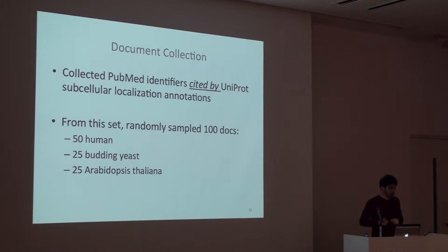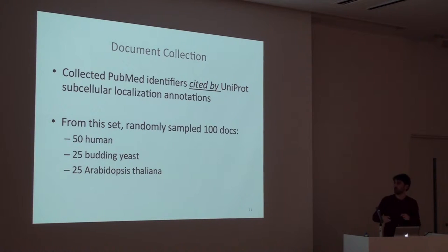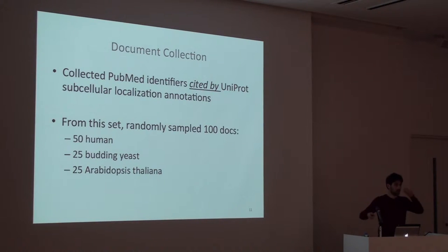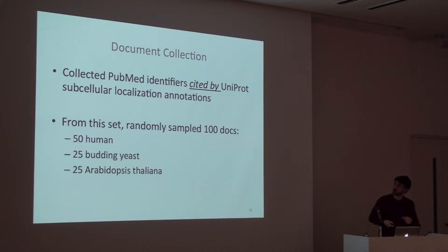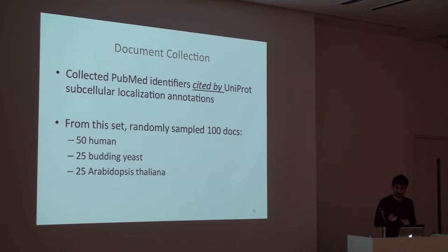How we collected the documents for annotation: first, we went to UniProt — SwissProt actually — for the organisms human, yeast, and Arabidopsis, and we got the publications cited for subcellular localization. The reviewers of UniProt cited those documents because they contain information about localization. From this set, we randomly sampled 100 documents: 50 for human, 25 for yeast, and 25 for Arabidopsis thaliana.